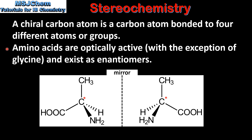Amino acids are optically active, with the exception of glycine, and exist as enantiomers. Here we can see the two enantiomers or stereoisomers of the amino acid alanine. The chiral carbon atom, which is shown with a red asterisk, is bonded to four different atoms or groups.